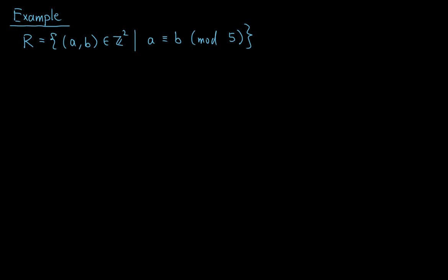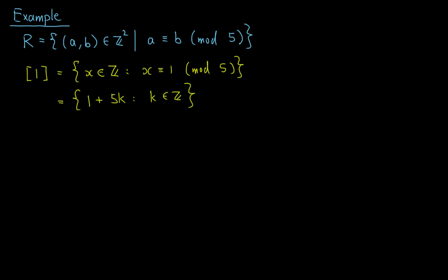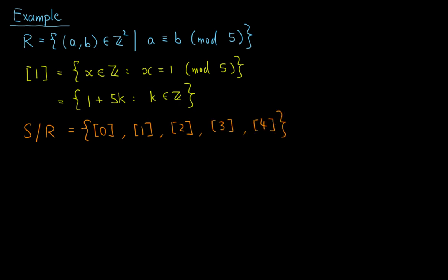As an example, let R be the set of ordered pairs (a, b) in S² such that a is congruent to b mod 5. The equivalence class of 1 is the set of elements x in ℤ such that x ≡ 1 mod 5, so it equals {1 + 5k : k ∈ ℤ} — that is, all integers giving remainder 1 when divided by 5. The quotient set S/R consists of the equivalence classes [0], [1], [2], [3], and [4], since [5] is the same as [0].